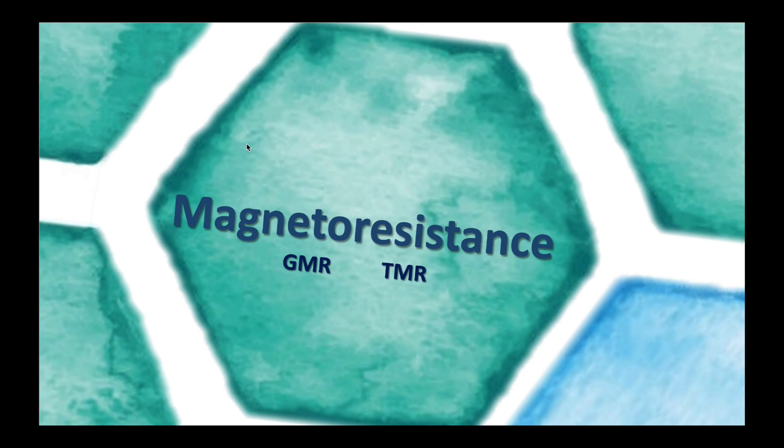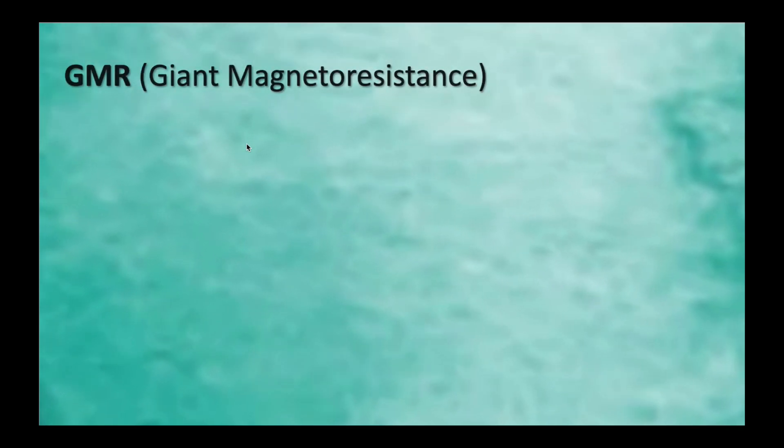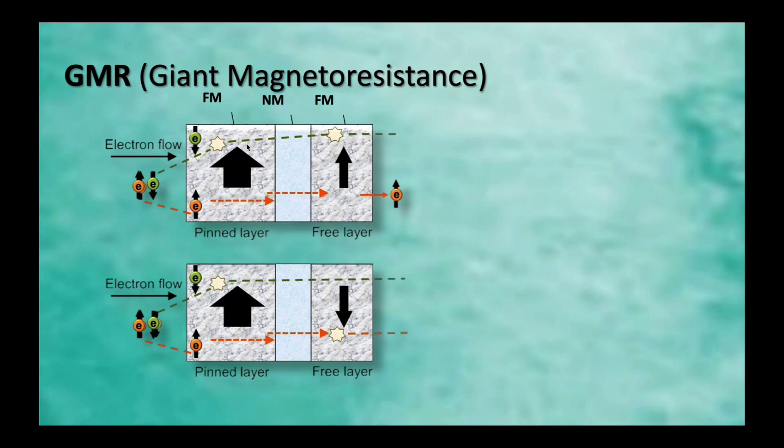The first one is called Giant Magnetoresistance, abbreviated as GMR. GMR was discovered first in multi-layer, consisting of ferromagnetic layer, then a non-magnetic layer, ferromagnetic layer, and non-magnetic layer. And what is ferromagnetic layer? It means that this layer has magnetization. You can imagine it's just like an iron magnet. It has magnetization.